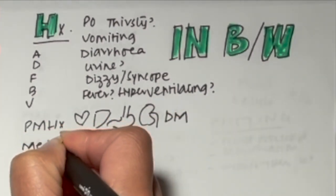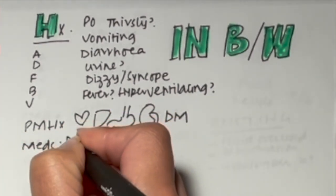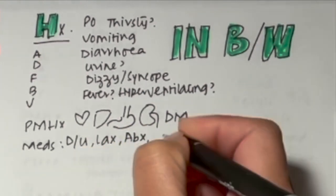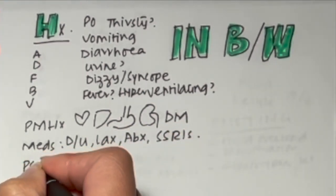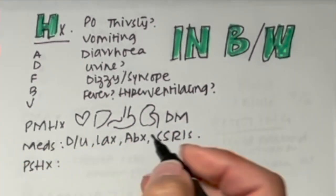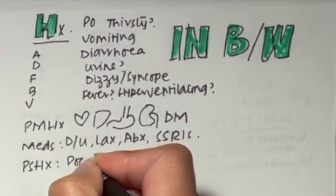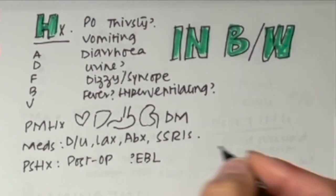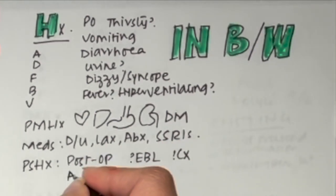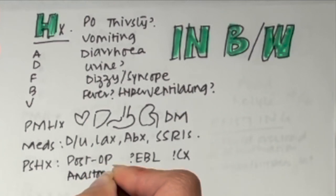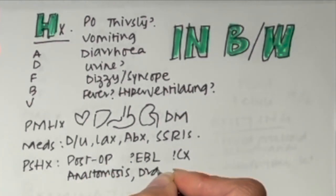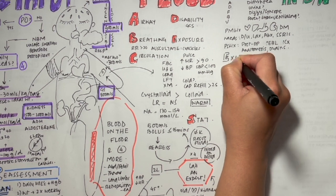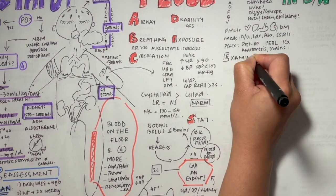It's really important to find out about their medications, especially if the patient is on diuretics, laxatives, antibiotics that cause diarrhea, and salt-wasting SSRIs. You can also check their post-op notes for significant blood loss or complications — do they have an anastomosis, any drains, or fistulae that can cause fluid loss?